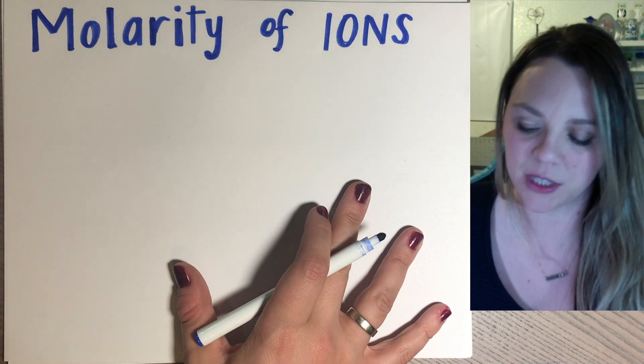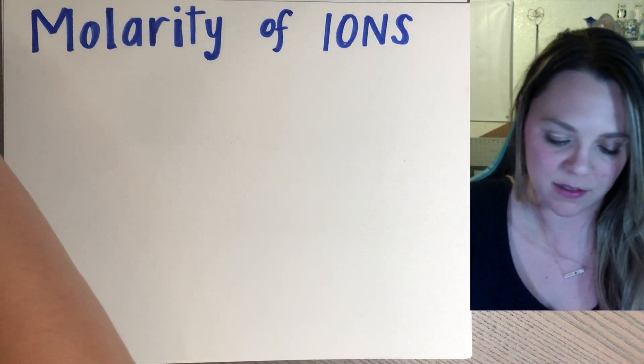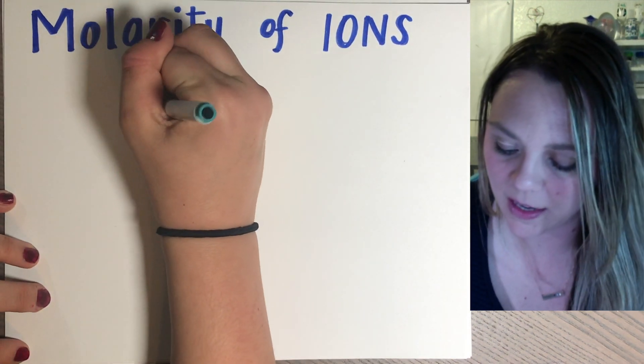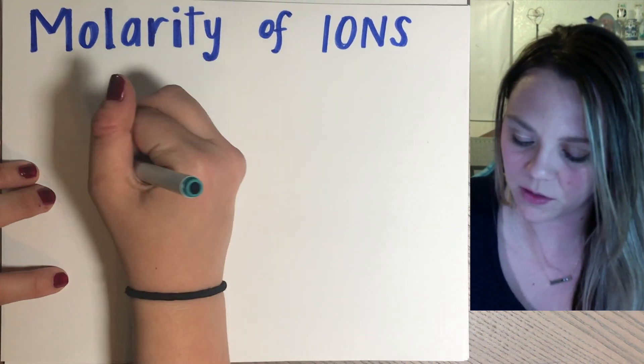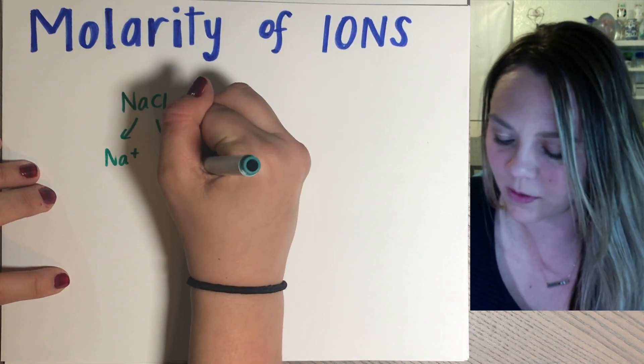You could have a solution that is just NaCl, for example. So this would dissociate to one sodium for every one chlorine.